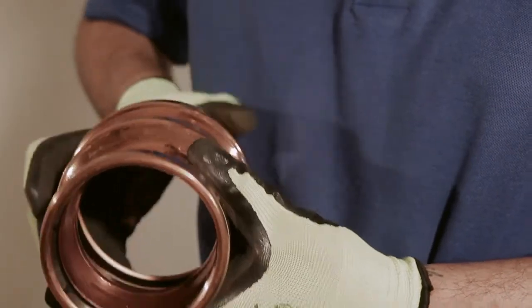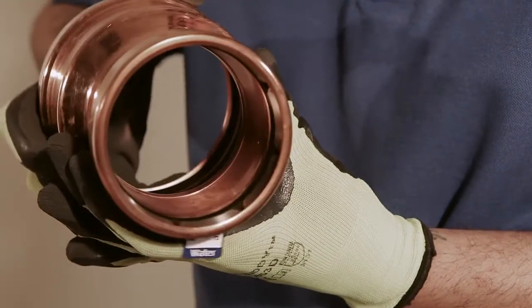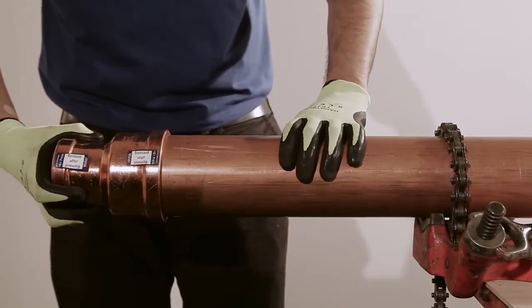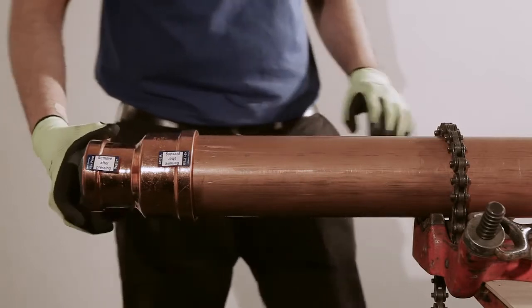Ensure the seals and grip rings are correctly located in the correct placement. The fitting must slide onto the pipe without significant resistance until it reaches the internal tube stop.